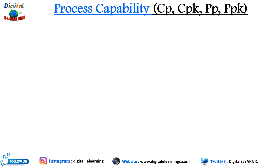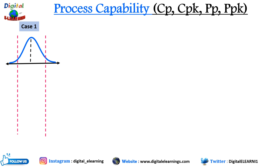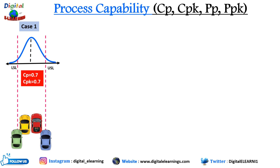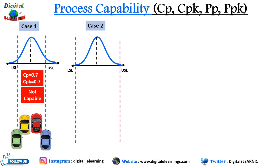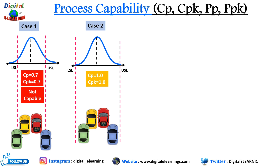Let's look at more detailed scenarios. In the first case, the driver is unsteady — the car often scrapes the wall, producing more defective parts unless the process width is reduced and the process is centered. Here, cp is equal to 0.7 and cpk is around 0.7, which is not a capable process. In the second case, the driver is still unsteady but better than case one — often coming too close to the specification limit boundaries. You are likely to have defects unless the process width is reduced. Here cp and cpk are around 1, which I would call barely capable because there is always a risk of hitting the side walls.